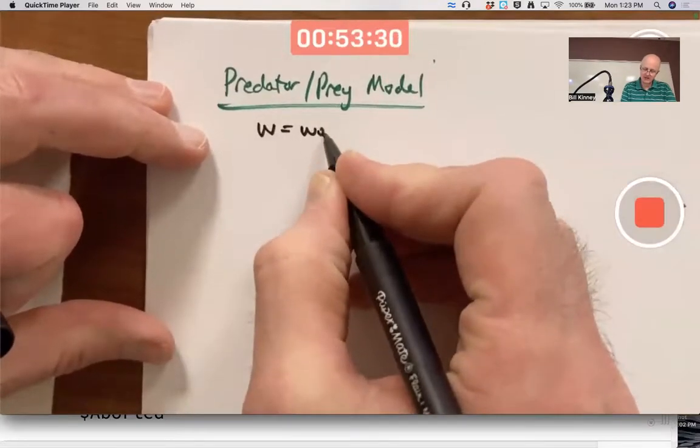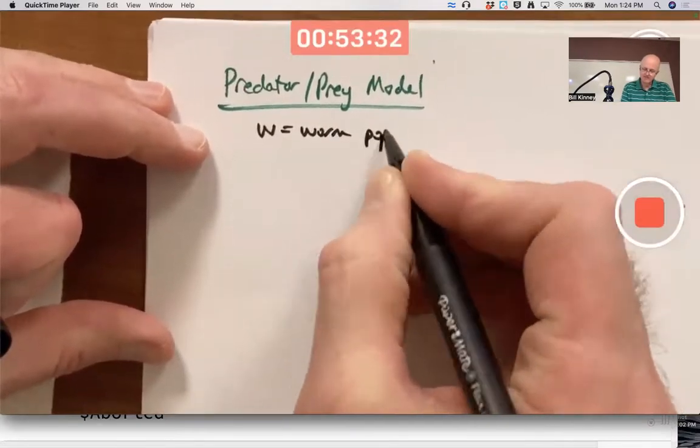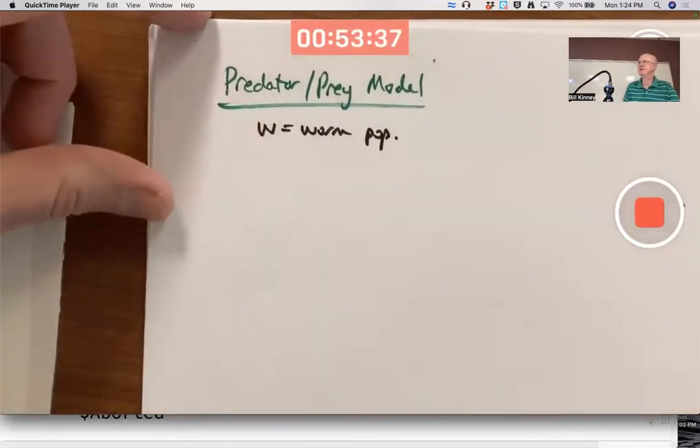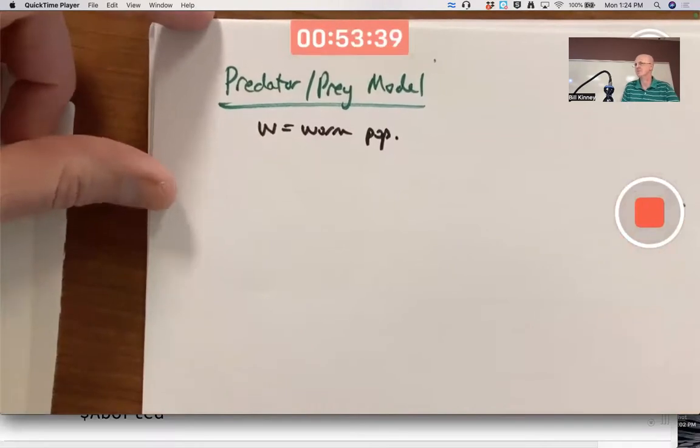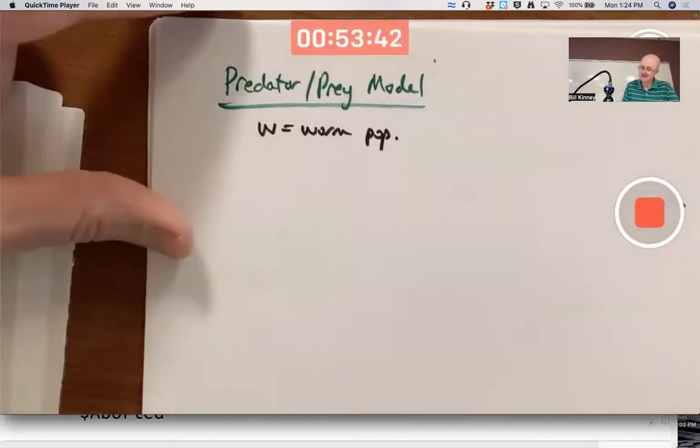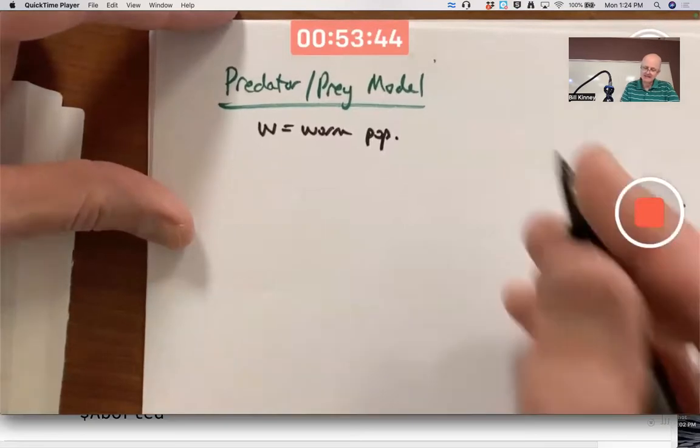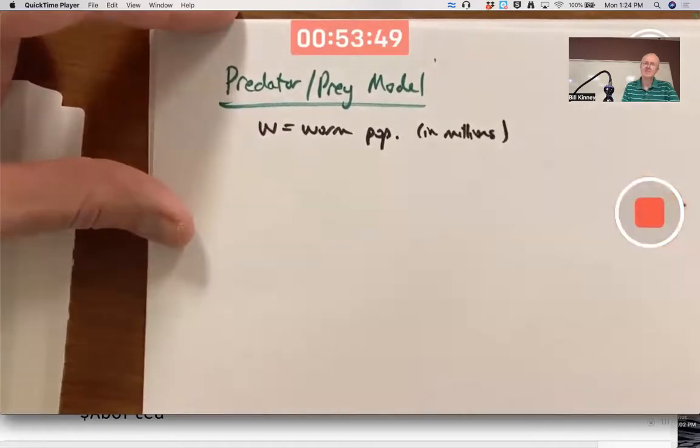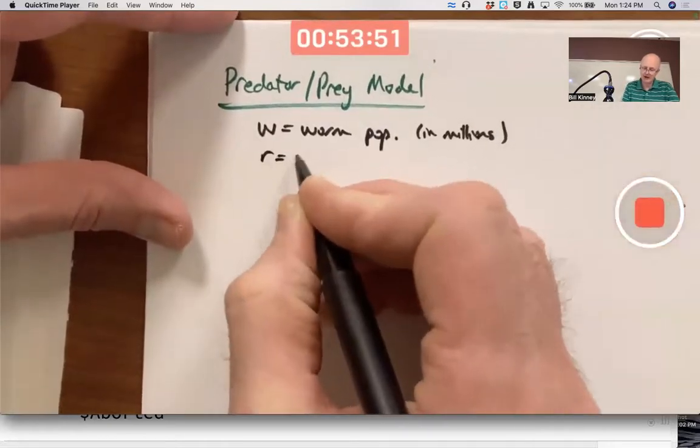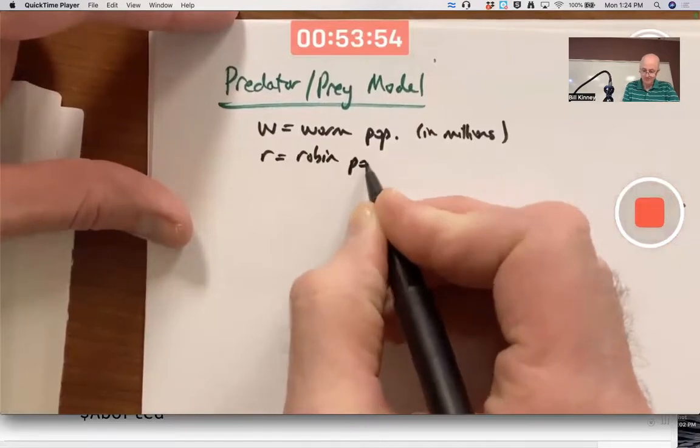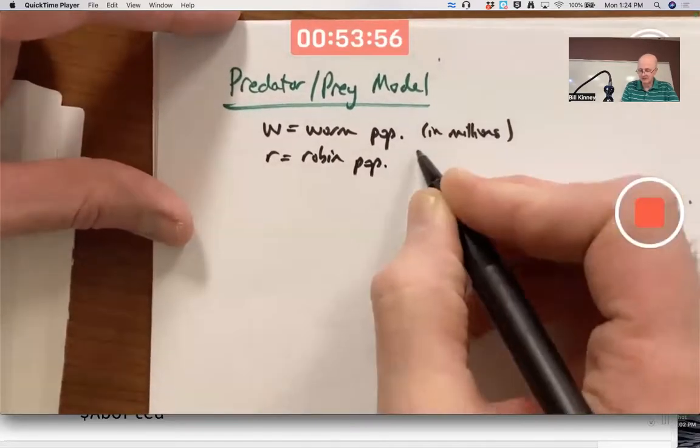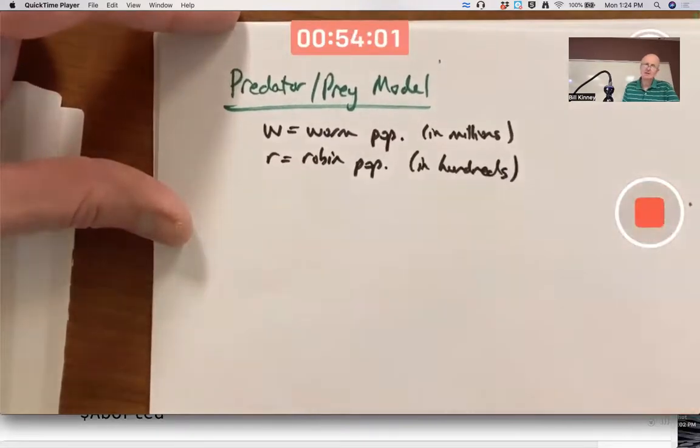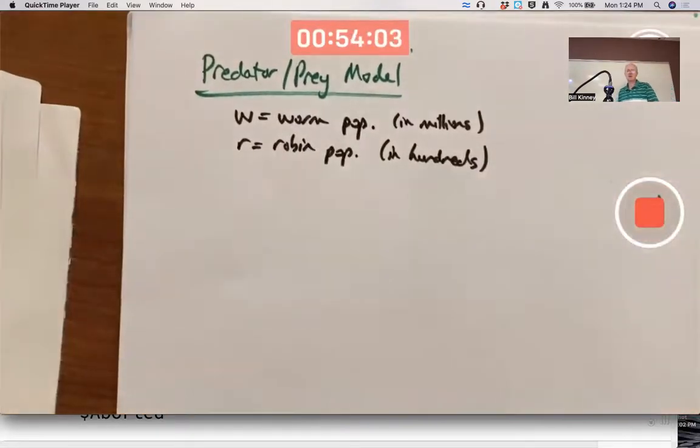W is going to be the worm population. Maybe on some farm somewhere. How many worms might there be in the soil of a farm? For sure thousands, maybe millions. Let's say in millions. And R is going to be the robin population, probably more likely to be in hundreds or thousands. Let's just say in hundreds.